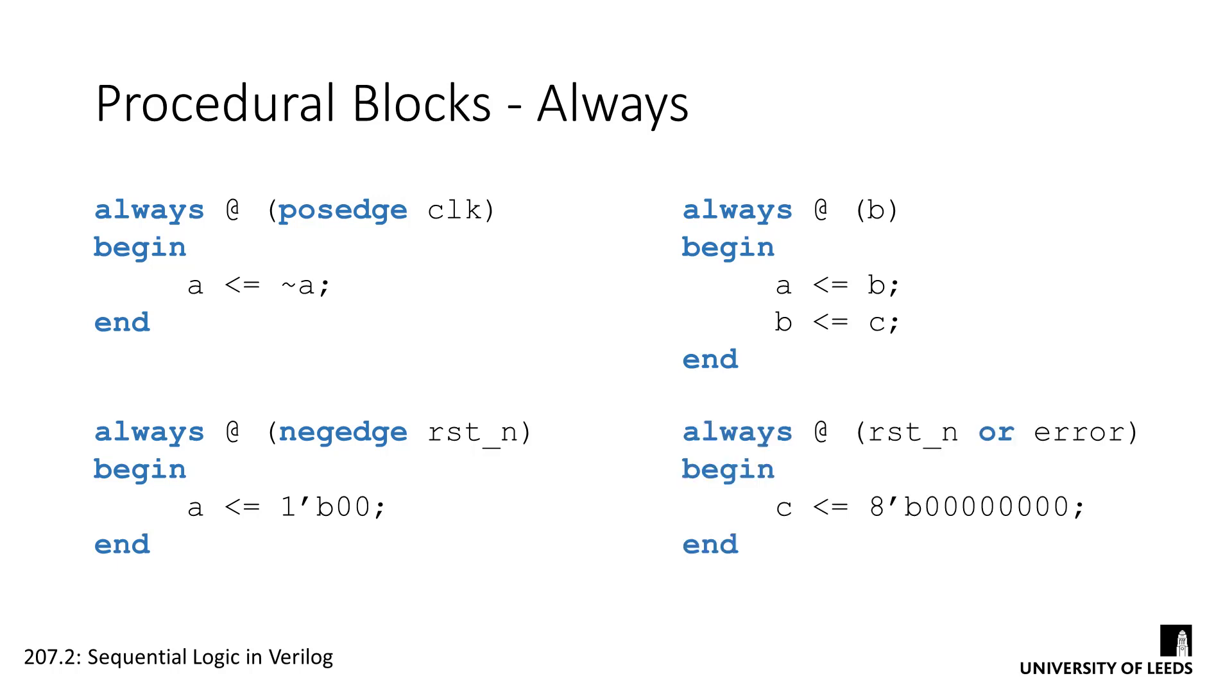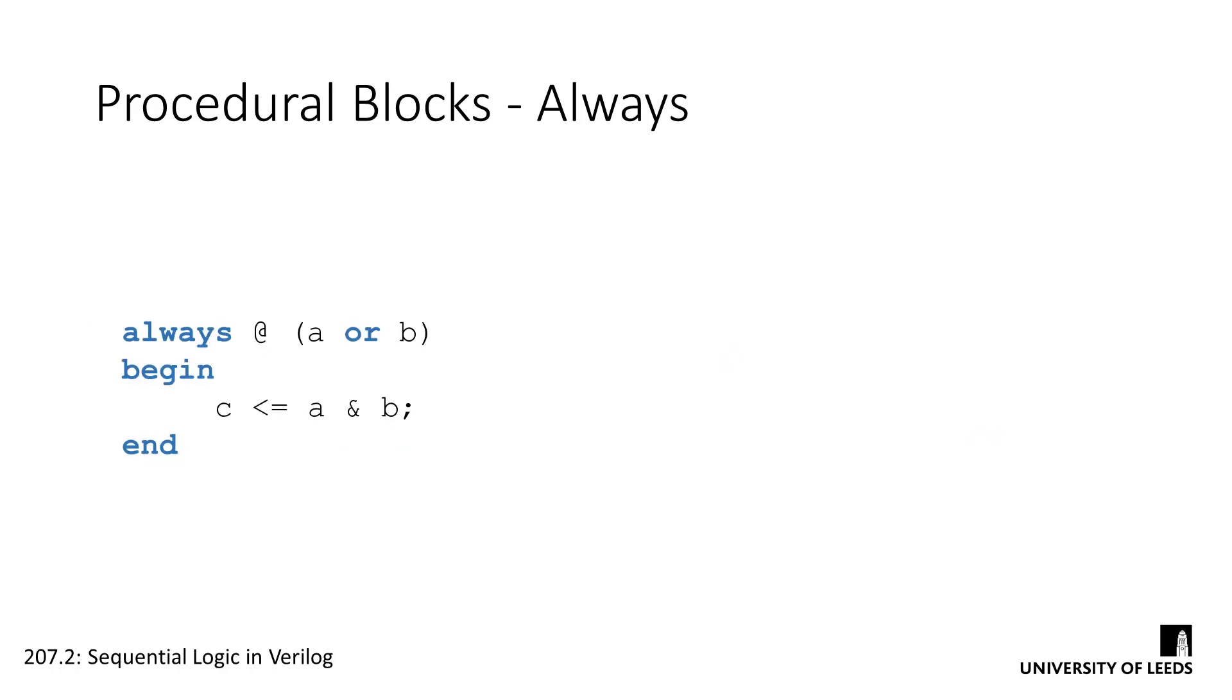We can also use multiple signals in the sensitivity list, building up a complex set of conditions required to trigger the block. If we wanted to, we could even use always blocks to build combinational circuits, so we'd put a star in the sensitivity list to indicate that the block should run on the changing state of any signal in it.